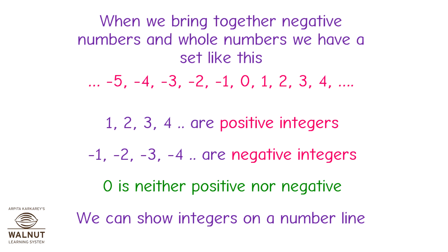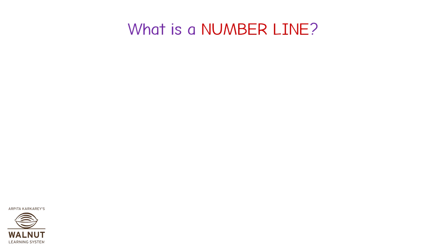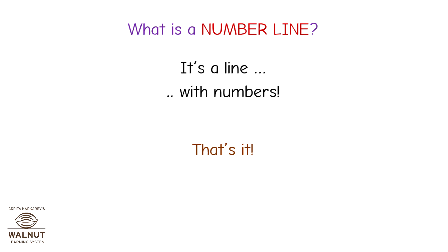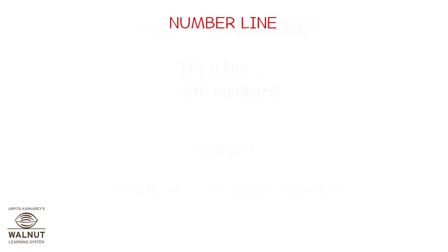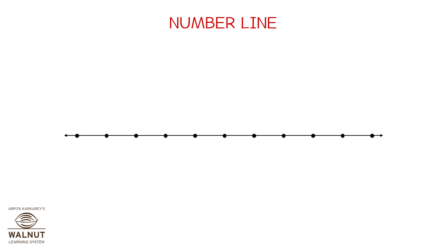We can show integers on a number line. What is a number line? It's a line with numbers. That's it. Let's draw one and see how it is. First, draw a line. Draw lots of points on it at equal distances from each other. Choose a point on it. Call it 0.